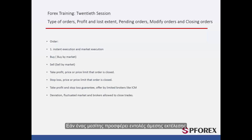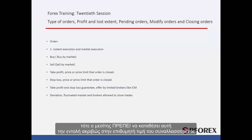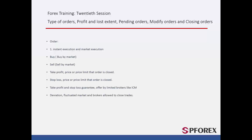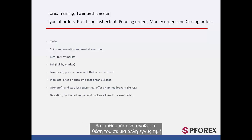If a broker provides instant execution orders, and a trader wants to order a trade on a symbol at an exact price, then the broker must place that order exactly at the trader's desired price. If an order cannot be taken, the broker may ask the trader whether he or she would prefer to open the order at another adjacent price.